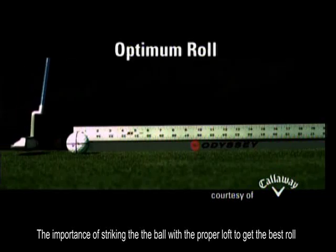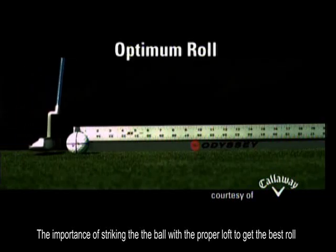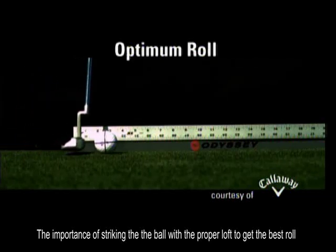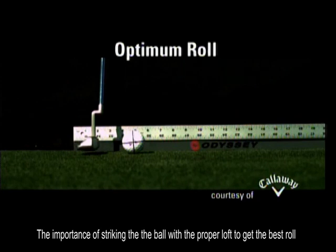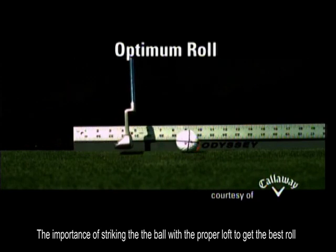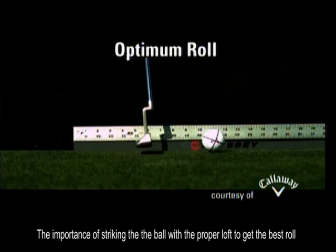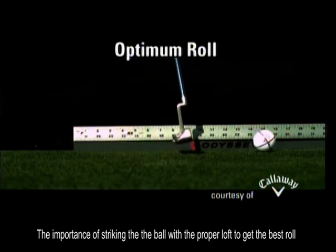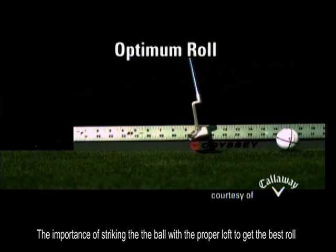Optimum roll. An optimum roll is when the ball starts out with the equator going almost level to the ground and slowly turning over. And that's what four degrees of loft at impact will do.